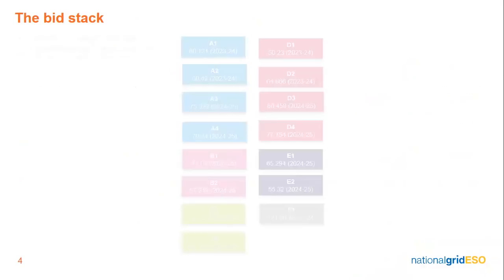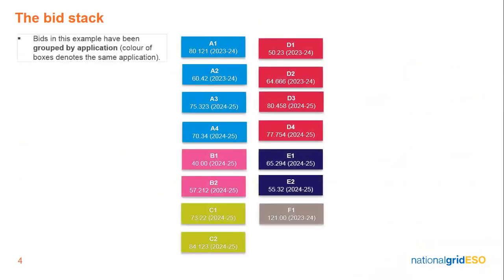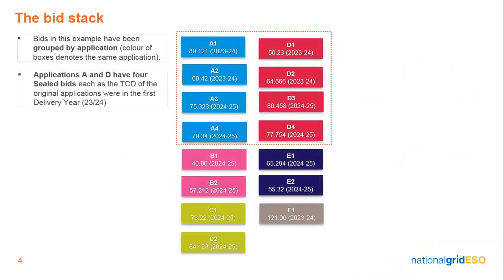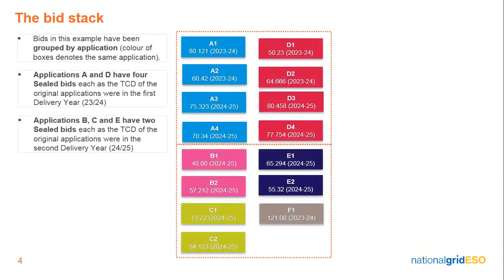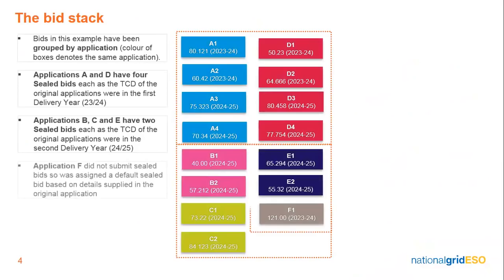The Bid Stack. Applicants can submit up to 4 sealed bids with no more than 2 sealed bids per delivery year. The number of bids an applicant can submit is based on whether the target commissioning date of their original application was in either the first or second delivery year. Bids are submitted using the same portal system that you will have used for your original application, and applicants will have 5 working days to submit sealed bids following a notice of auction.